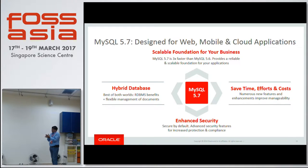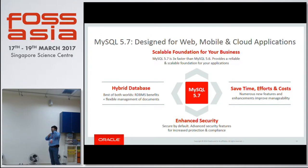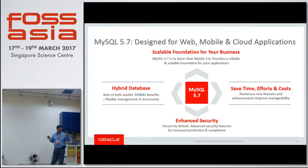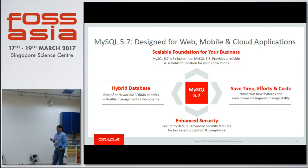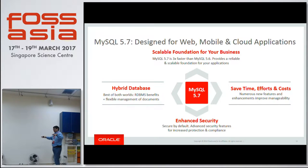There are four things in our mind when creating MySQL. One, it has to be a scalable foundation — if you want to use it for one instance, it works; if you want to use it for 20 or a thousand databases managed together, it should work. It has to be hybrid — whether it is RDBMS, a document store, SQL, or NoSQL, MySQL 5.7 needs to deliver. It has to save time and effort — it has to be easy to administer. And finally, it has to be secure. Those are the four legs on which our development stands.